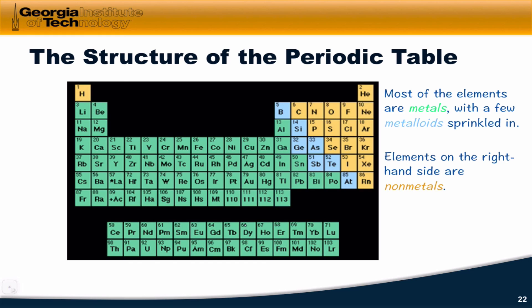Non-metals are not metals in their state at normal room temperature and pressure. For example, we saw carbon and nitrogen — diamond is definitely not a metal, and nitrogen gas and even liquid nitrogen don't look like metals either. These are the non-metals.